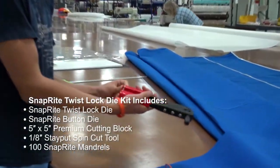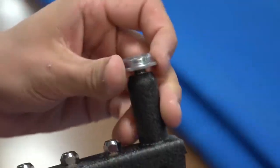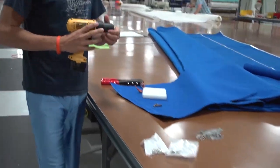Using any standard riveting tool, we're going to first install the SnapRite button die. To do that, make sure the lever of the tool is depressed and screw it into place all the way so it's flush.